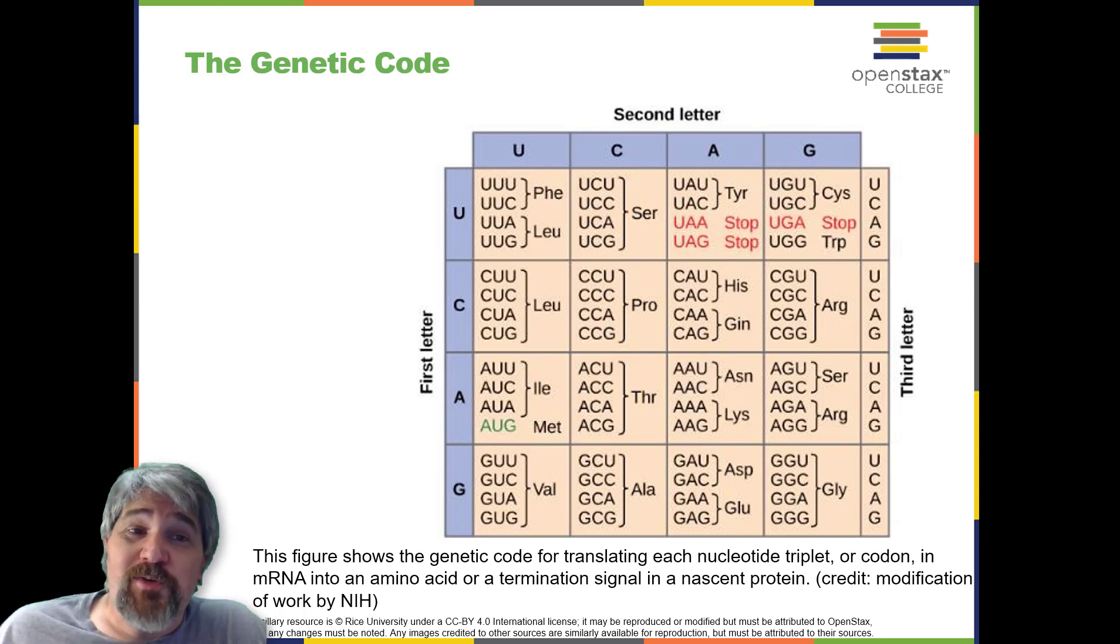The reading frame for translation is set by the AUG start codon near the 5' end of the mRNA. The genetic code is universal. With few exceptions, virtually all species use the same genetic code for protein synthesis, which is powerful evidence that all life on earth shares a common origin.